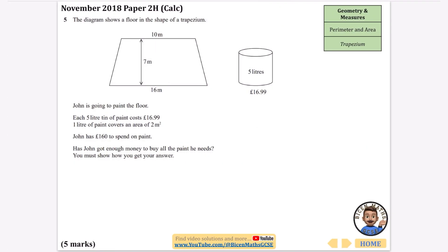The diagram shows a floor in the shape of a trapezium. John is going to paint the floor. Each 5 liter tin of paint costs £16.99, and 1 liter covers an area of 2 meters squared. John has £160 to spend. Has he got enough money? You must show your working.